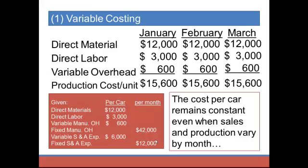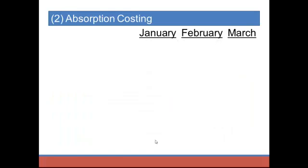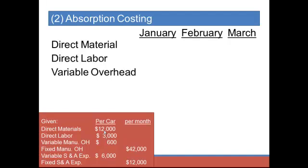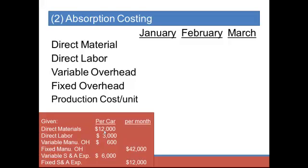Now let's turn to absorption costing. I'll compute the cost per unit for January, February, and March with a column for all three months. Under absorption costing, all product costs — whether variable or fixed — are assigned to inventory. So we have rows for direct material, direct labor, variable overhead, and fixed overhead, covering all product costs from the problem. The key difference between the two methods is what we do with fixed overhead.